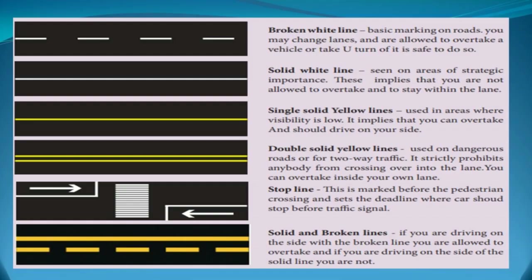Basic road markings: A broken white line means you may change lanes and are allowed to overtake a vehicle or take a U-turn if it is safe to do so. A solid white line is seen on areas of strategic importance and implies you are not allowed to overtake — stay within the lane. A single solid yellow line is used in areas where visibility is low, implying you can overtake and should drive on your side.